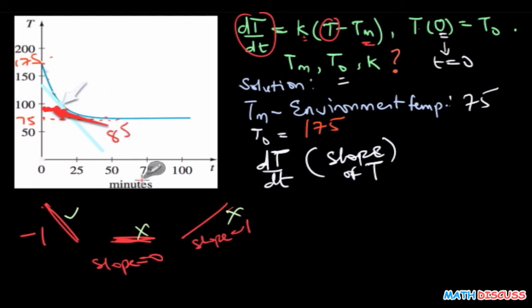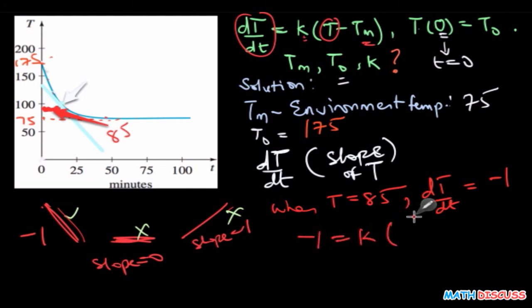So this simply means that when T equals 85, the slope which we are assuming as dT/dt equals negative 1. So we are going to use this to find k. So dT/dt equals negative 1 equals k times T, which is 85, minus Tm, which is 75. 85 minus 75, that's about 10. So minus 1 equals k times 10.